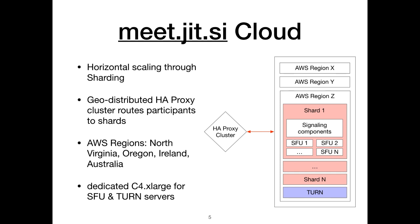The signaling components are a single point of failure for a shard, but each region has several shards. Each region also has an auto-scaling group of TURN servers in case Direct Connect fails. Our SFUs and TURN servers run on dedicated C4X large instances, which have 4 vCPUs, 8GB of RAM, and high network performance.